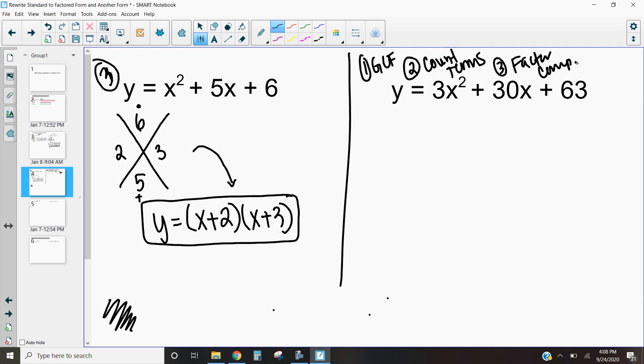So let's look at this one and walk through our steps of factoring. As we are looking at this, I noticed that 3, 30, and 63 all have a common factor. And that factor is 3. So I'm actually going to factor my 3 out before I even move forward. If I factor out 3, I get x squared. If I factor 3 out of 30, I'm going to get 10x. And if I factor a 3 out of 63, I'm going to get 21.